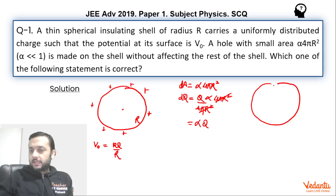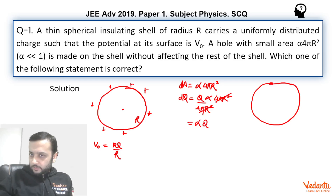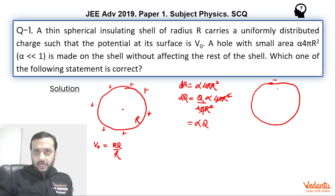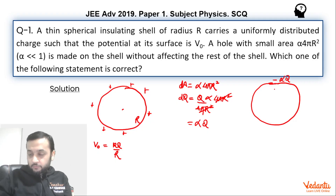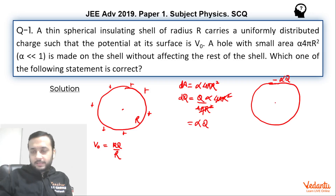To solve this question quickly, we can think of it as: the shell is still full, but a negative charge of −αQ has been placed at the location of the hole. From the perspective of charge, this is the same situation — the −αQ and the +αQ from that portion neutralize each other, leaving us with the remaining shell.